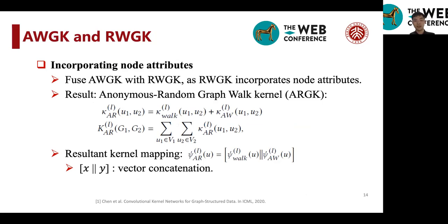And the resultant kernel is the anonymous random walk kernel called the ARWK. And the resultant kernel mapping is simple, as we use sum to combine the kernels. And the resultant kernel mapping would be a simple vector concatenation, which provides theoretical insights to our future analysis.